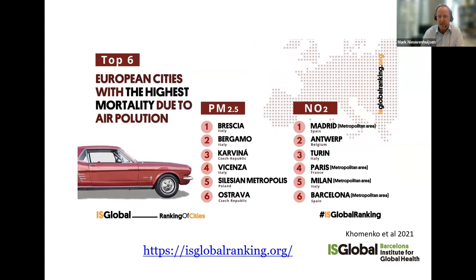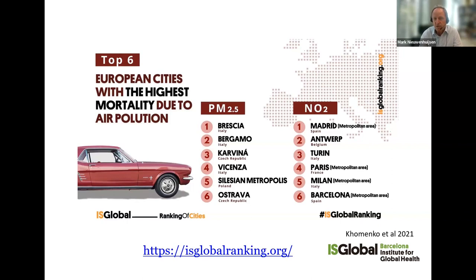When you look at the cities most affected by air pollution and highest mortality, there were differences between different cities for different pollutants. For PM2.5, the cities with the highest mortality burden were in Northern Italy, like Brescia and Bergamo, partly because of the industry there and the landscape conditions, followed by cities in the Czech Republic and Poland where there's still quite a bit of coal burning. For NO2, cities like Madrid, Antwerp, and Turin had the highest mortality burden, to a large extent related to traffic, which is still a major contributor to NO2 levels.